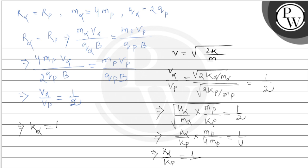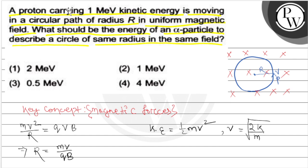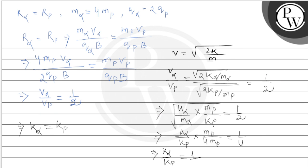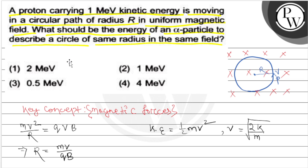The proton is carrying 1 mega electron volt kinetic energy. The proton's energy we know, and the alpha's energy we need to calculate. So kinetic energy of alpha is equal to kinetic energy of proton, which is 1 mega electron volt. That implies kinetic energy alpha is also equal to 1 mega electron volt, which is the correct answer. So option 2, 1 mega electron volt, is the correct answer.